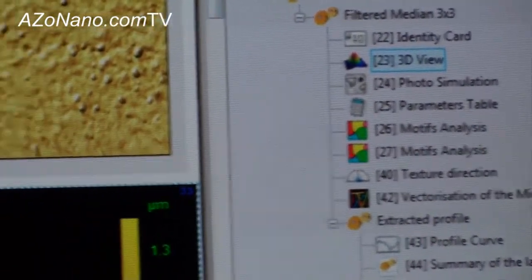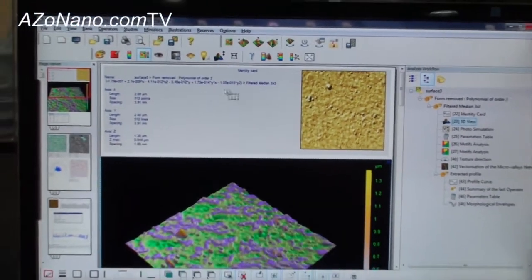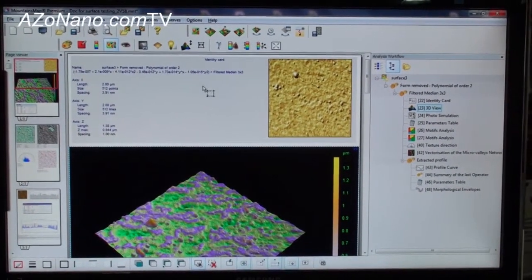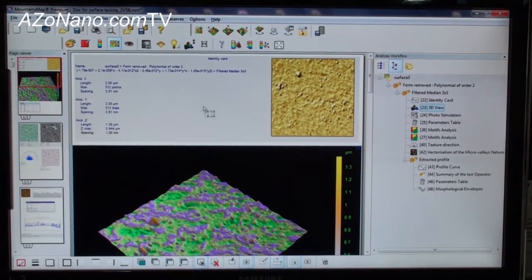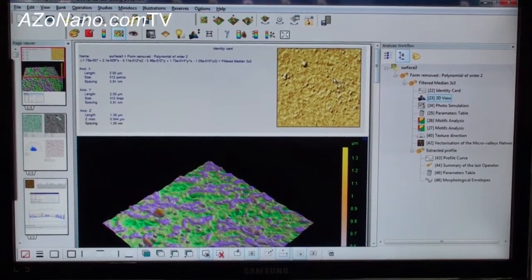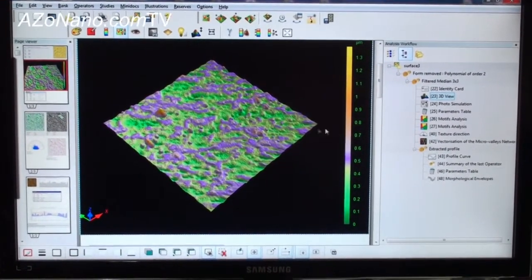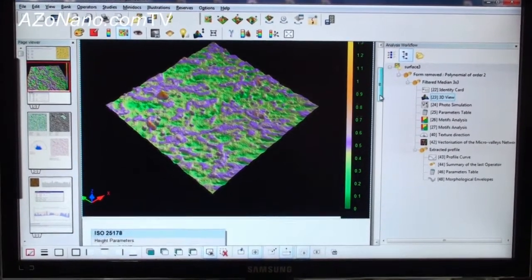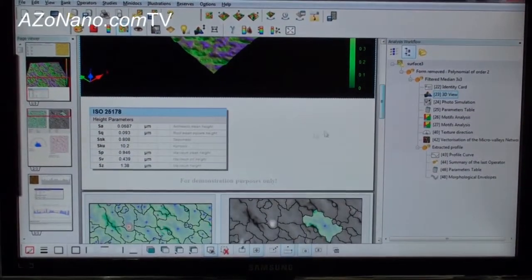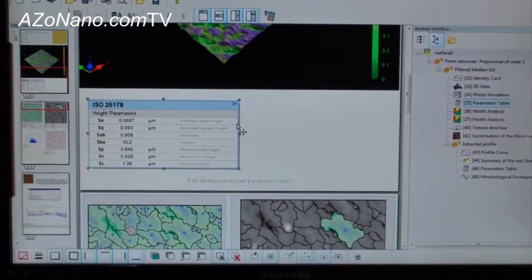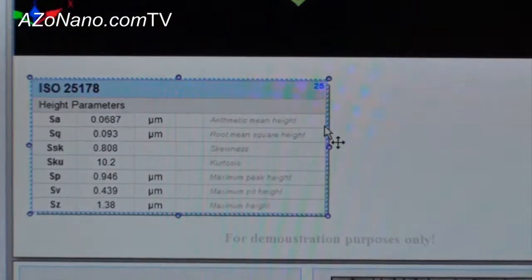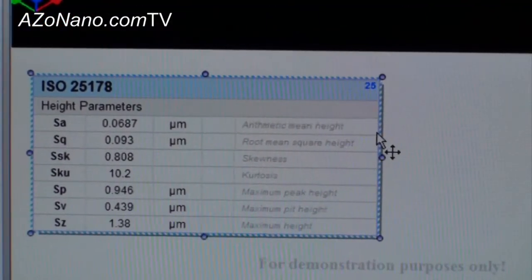So let me show you the beginning of the document. This is some information about the measurement itself. You have the resolution, the top view of the surface. Again, you have the 3D view of the surface. And you have some parameters about the surface texture from the surface.